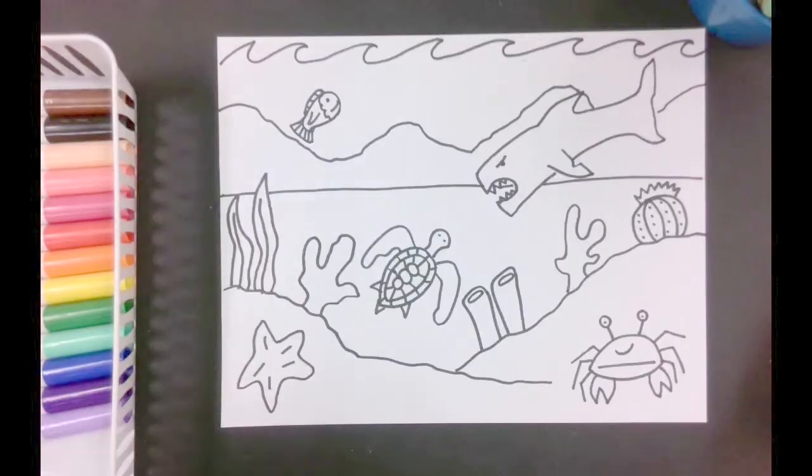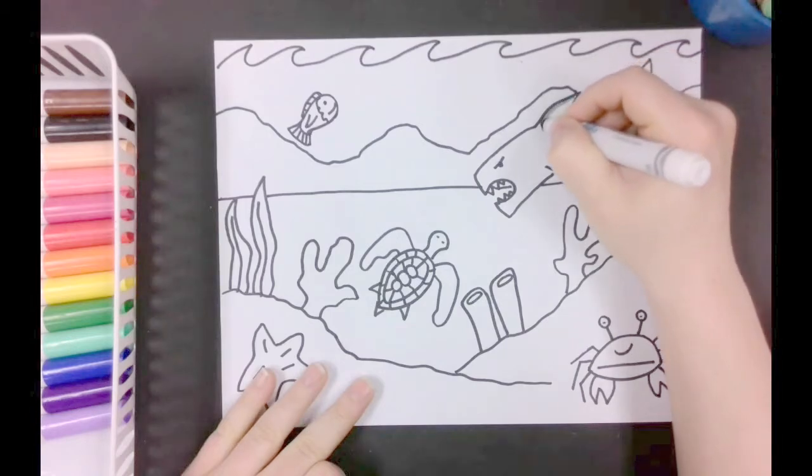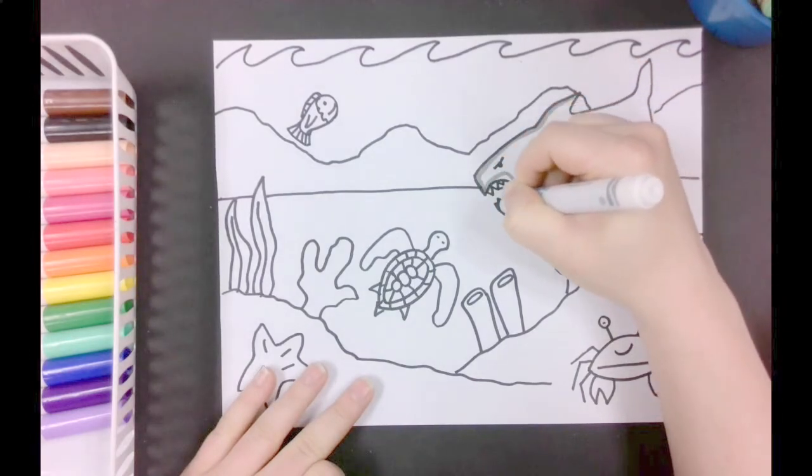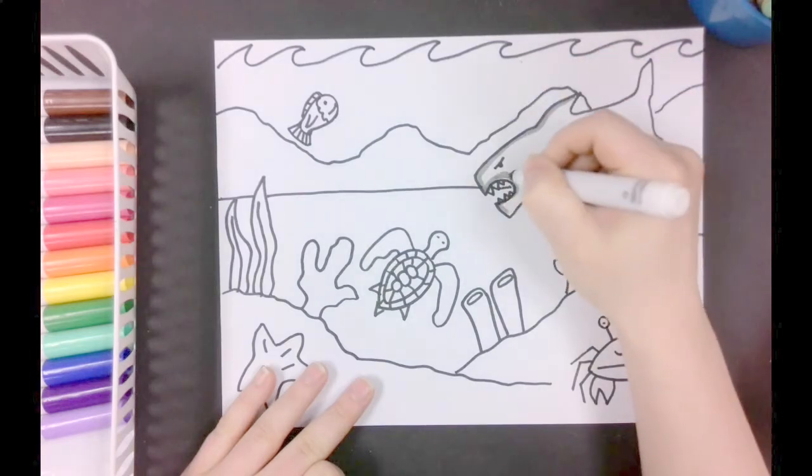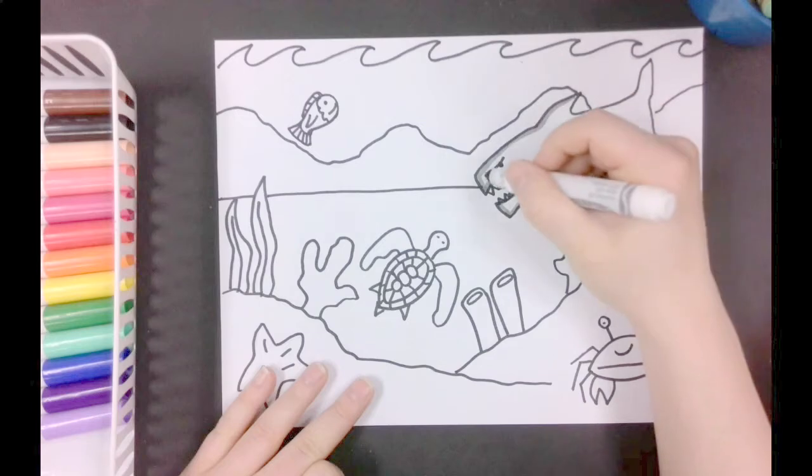Now you can color. I'm going to color with both markers and crayons for my picture. You can choose whatever tools you want to color with. When you color, it's really important to stay inside the lines you've created. Think of your picture as your own coloring book that you made yourself.